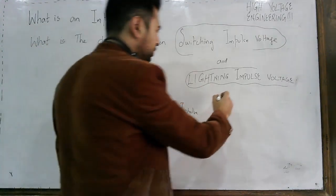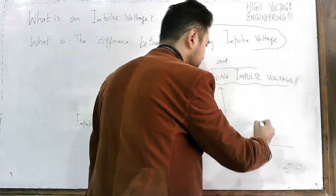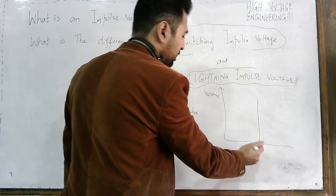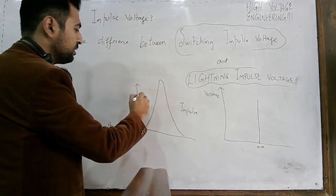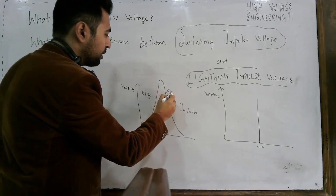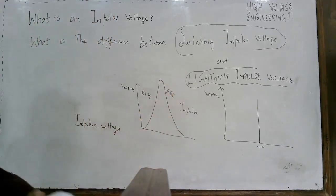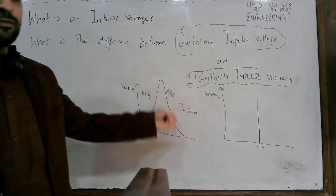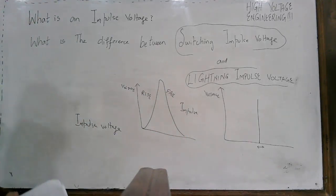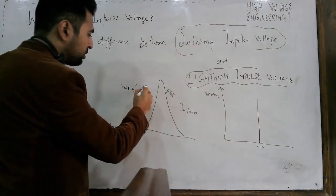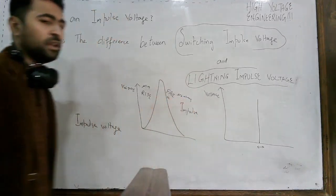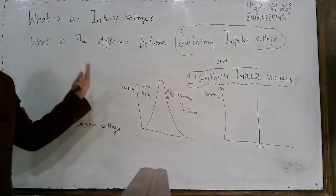In theoretical literature, impulse voltage is normally represented by a straight line. But practically, there will be some time for the rise of this voltage and some time for the fall of this voltage. This impulse voltage rises and then falls down to zero. Typically, the rise time is in microseconds and fall time may be microseconds to milliseconds. These are the practical characteristics of a lightning impulse voltage.